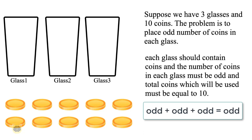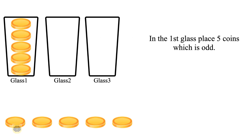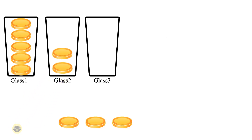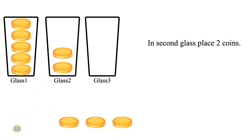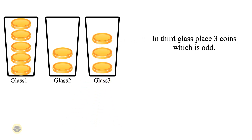Therefore we must think outside the box. In the first step, place 5 coins in the first glass, which is odd. After that, in the second step, place 2 coins in the second glass, and in the third step, place 3 coins in the third glass, which is odd.